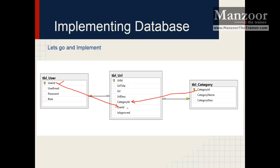There is also an 'is_approved' field. Initially, once a URL is submitted, is_approved is set to 'P' for pending. Once it is approved, we will change it to 'A' or some code. Finally, the category table has category id, category name, and description. This is the simple database structure that I have, and I am going to implement this in our next video. Thank you very much.